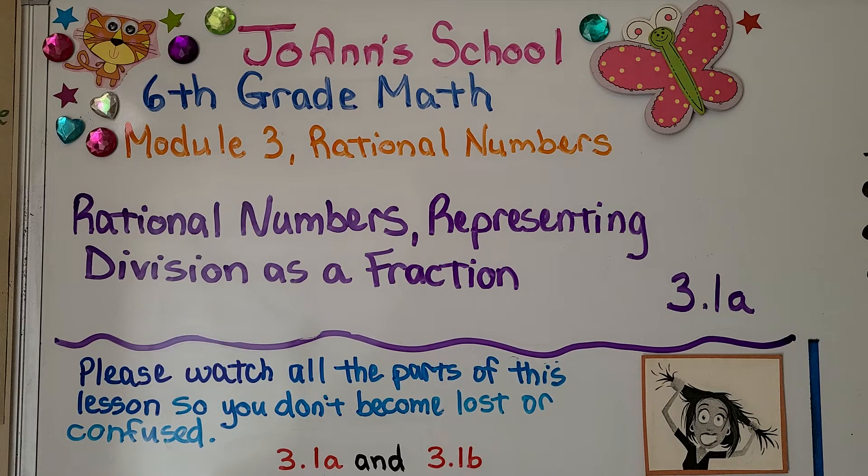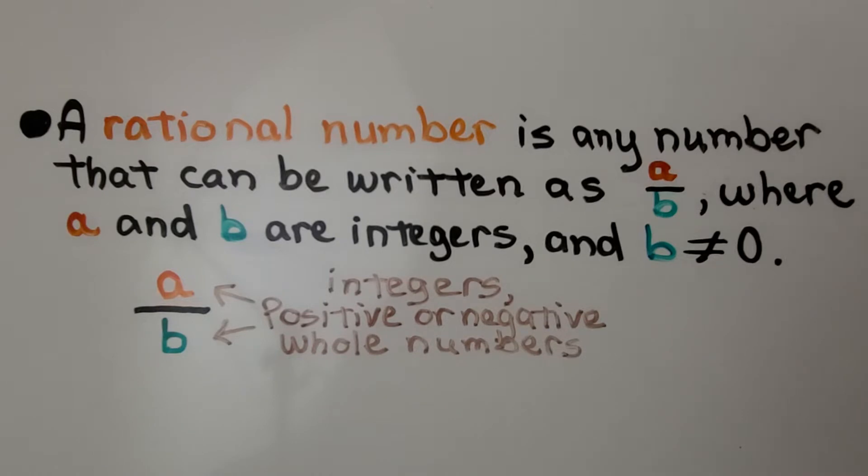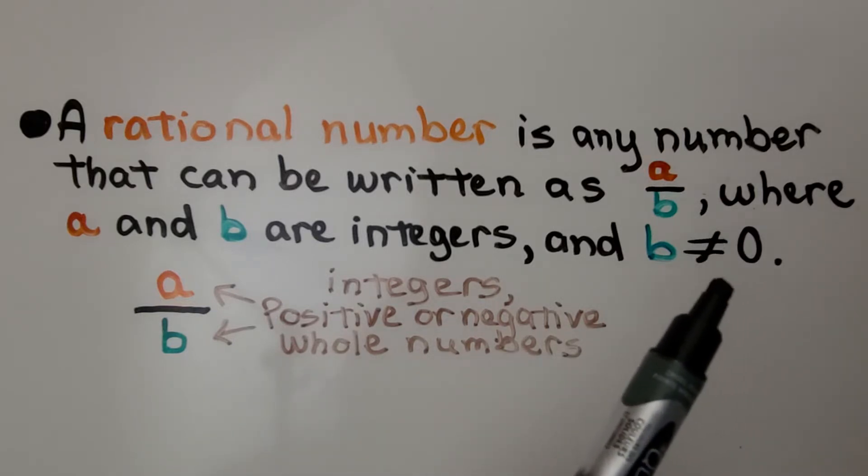Lesson 3.1a, Rational Numbers Representing Division as Fractions. This is the first part of 3.1. A rational number is any number that can be written as a over b, where a and b are integers, and b is not equal to zero.